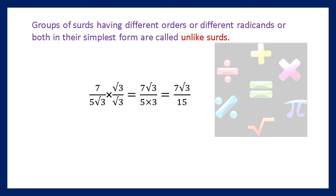7 divided by 5 into root 3, multiplied by square root of 3 divided by square root of 3, is equal to 7 into root 3 divided by 5 multiplied by 3, which is equal to 7 into root 3 divided by 15.